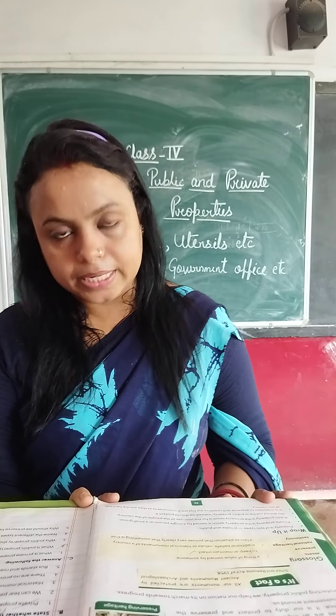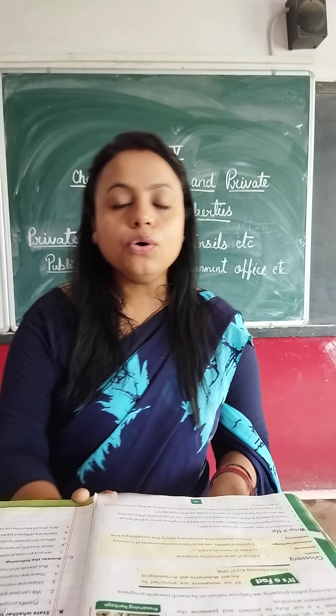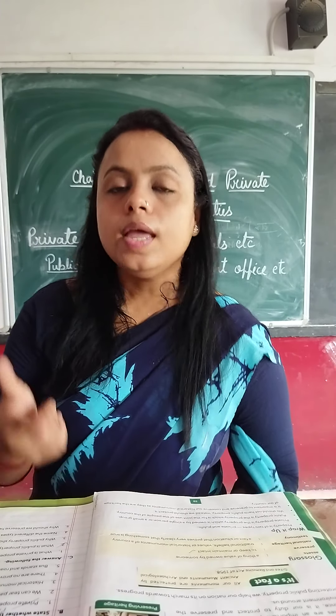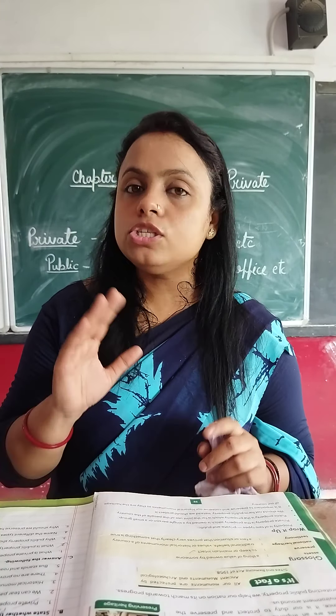So this was the explanation of chapter number 5: public and private property. Your homework is to read pages 30, 31, and 32. If you have any doubt or problem regarding chapter number 5, please contact me and I will solve your problem. Take care, bye, see you.